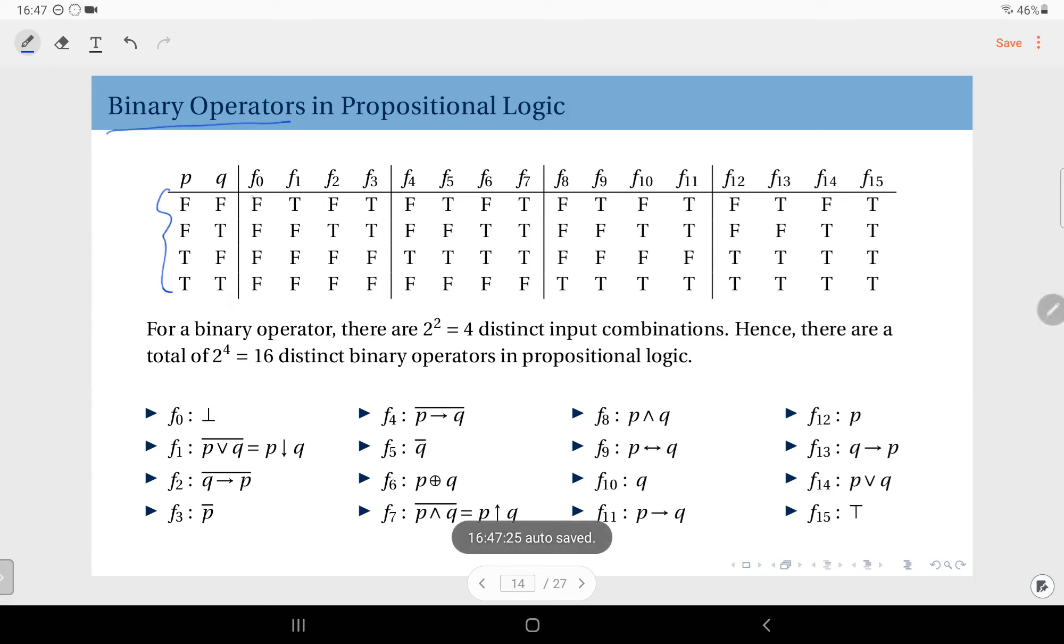Because you will define, let me put some generic binary operation here without naming it specifically. You will have to define four different outcomes or outputs for four possible input combinations. And each of them can take two possible values, either true or false. So you will have to make a selection out of two for each of these four positions. And that will give you a total of 2 to the power of 4, which is 16 distinct binary operators.